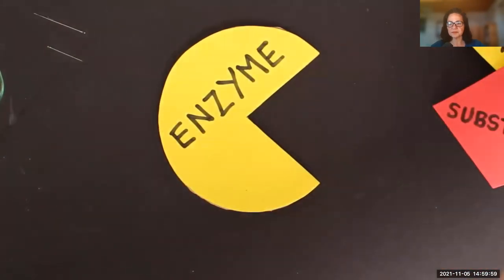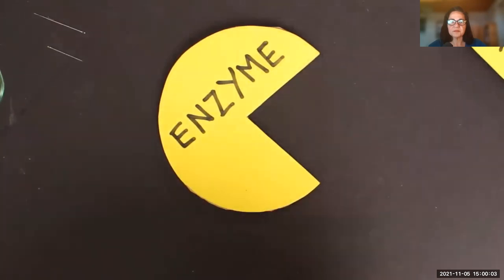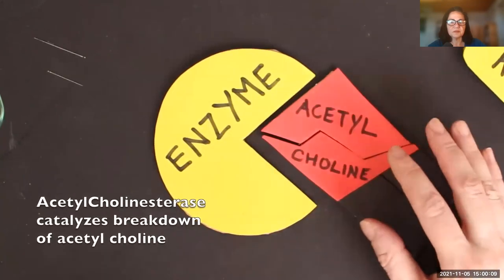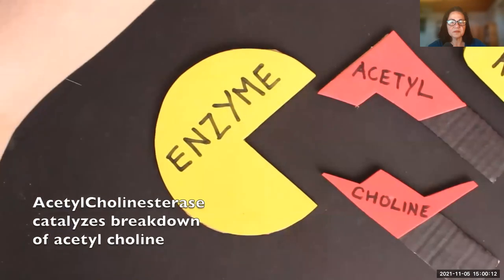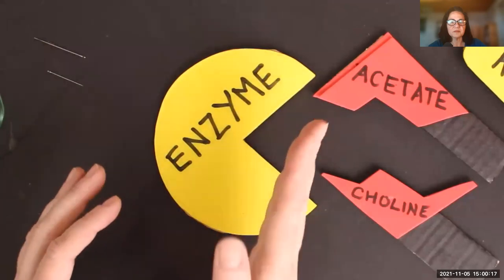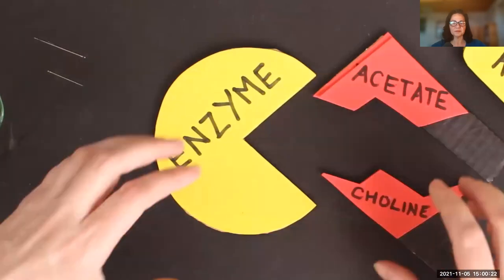A nice example is the substrate acetylcholine. Acetylcholine is broken down by an enzyme called acetylcholinesterase. What that enzyme does is when acetylcholine binds it, it breaks it into two pieces — namely acetate and choline. The enzyme is a big protein that has a binding site that the substrate binds, and then the enzyme changes the substrate. Now that's a different situation than what we have with the receptor.